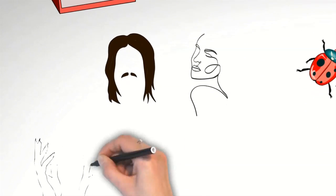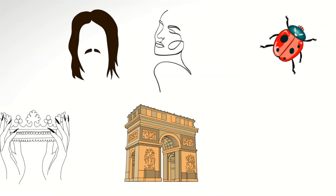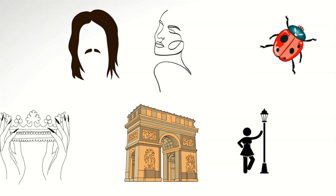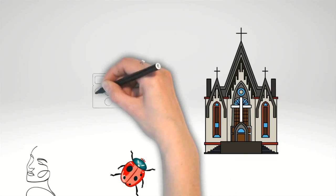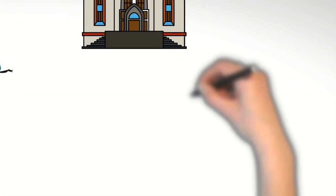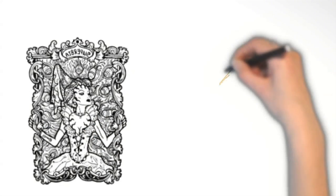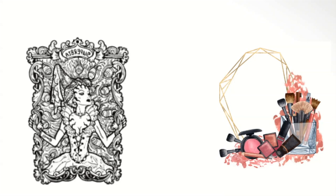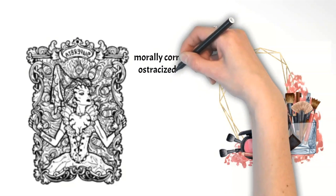But it wasn't always considered a symbol of wealth and status. During the Middle Ages in Europe, red lipstick was associated with prostitution and was considered a mark of sinful behavior. This view was largely influenced by the church, which believed that makeup and other forms of adornments were sinful and considered their use to be a sign of vanity and excess, a form of deception that could lead them astray from the path of righteousness. As a result, many women who used cosmetics, including red lipstick, were often considered morally corrupt and were ostracized by society.